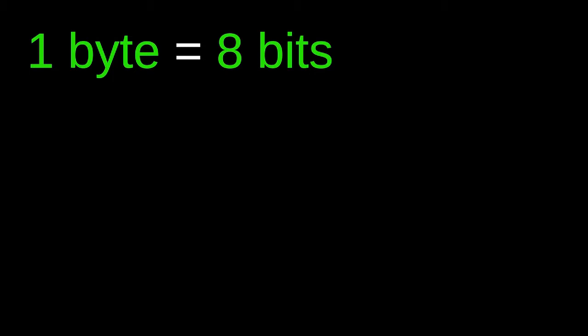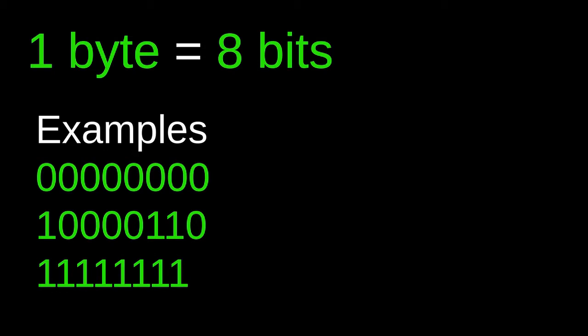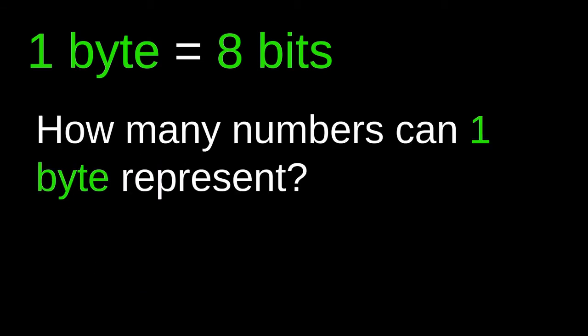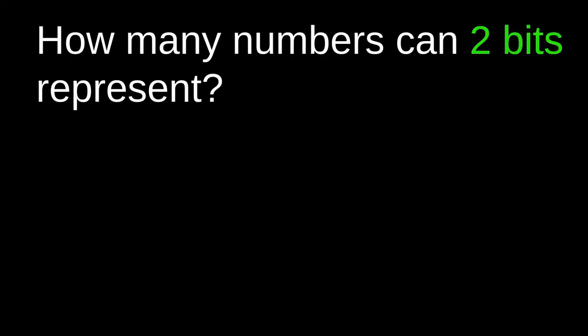One byte is equal to eight bits, so you can think about it as a sequence of zeros and ones where the length of the sequence is equal to eight. For example, a sequence of eight zeros is one byte, another example is a sequence of ones and zeros, and another example is all ones. So now I'm going to ask you: how many numbers can one byte represent?